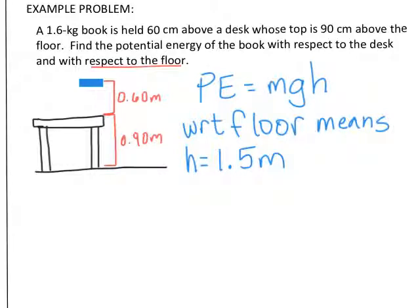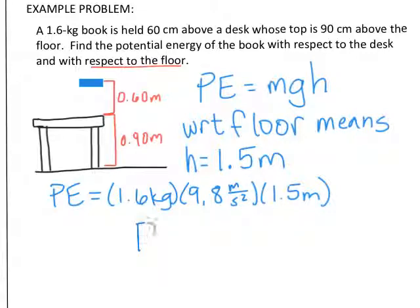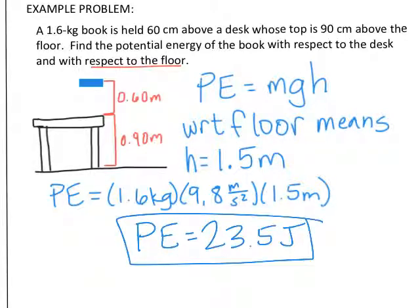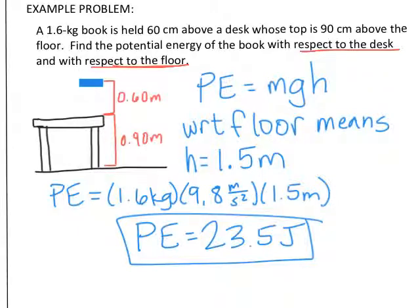Plug in the numbers and you should get an answer of 23.5 joules. Remember, a reference point is very important. In your problems, pay attention to whether the reference point is with respect to the desk, the floor, or some other object — we might even look for potential energy with respect to the ceiling. We'll do more examples in class.